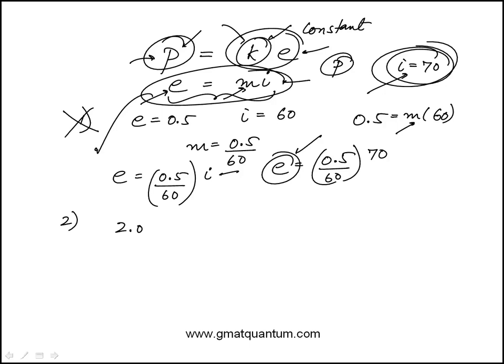Two says P is 2.0 whenever I is 50. So here we have P is K times E and E is M times I.